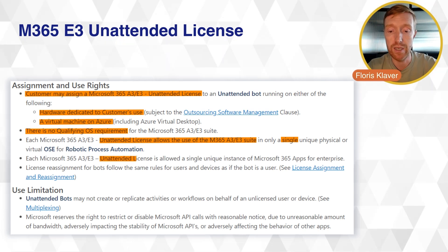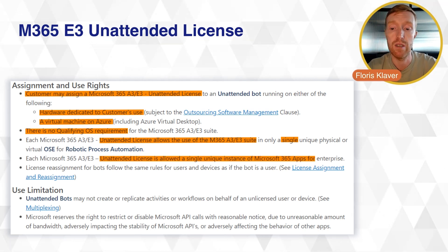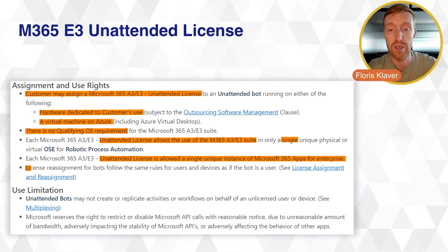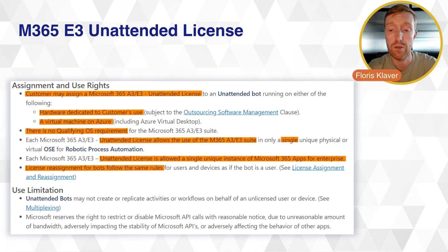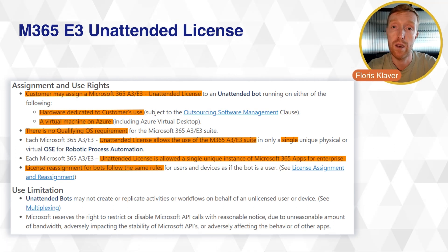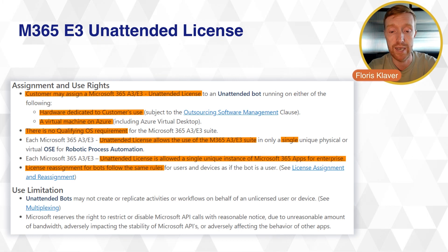Each unattended license is allowed a single unit instance of Microsoft 365 Apps for Enterprise. License reassignments for these licenses follow the same rules as you are used to from Microsoft, meaning you cannot move this more than once every 90 days.